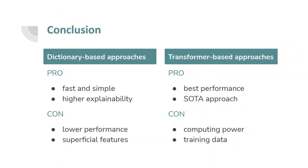In sentiment analysis, there are two main approaches: dictionaries and transformer models. While dictionary-based approaches promise simple and fast implementation and offer higher explainability compared to transformer models, they also rely on rather superficial features. Recently, transformer models gained much attention in the research community because they consistently outperformed traditional dictionary methods. Therefore, they are currently the state-of-the-art approach in sentiment analysis, although they require extensive resources.